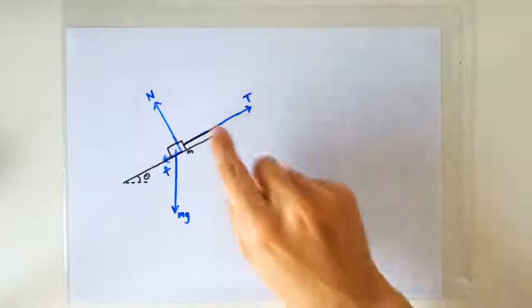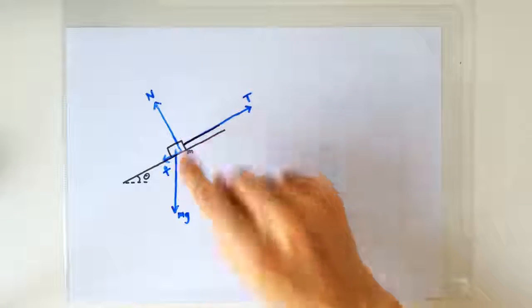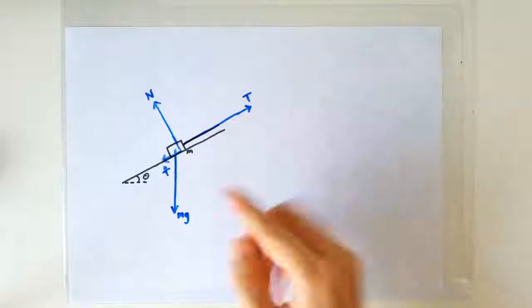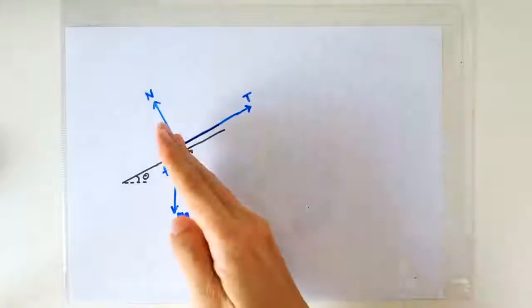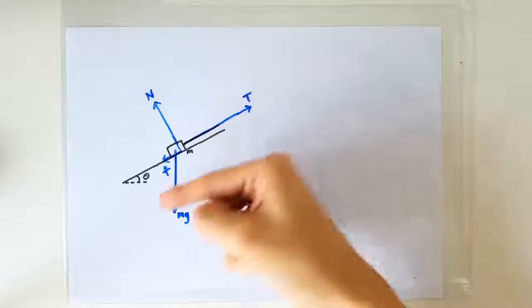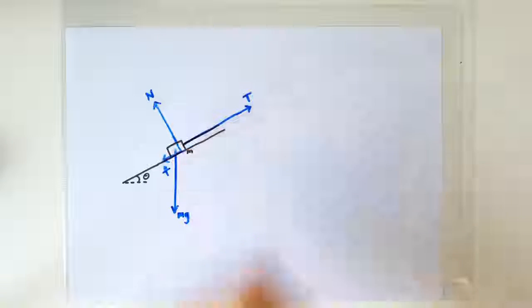Well, it depends on how strongly the rope is pulling on the block. If the tension in the rope is so strong that the block is tending to slide upward, then the frictional force will be acting downward to hold back the block.